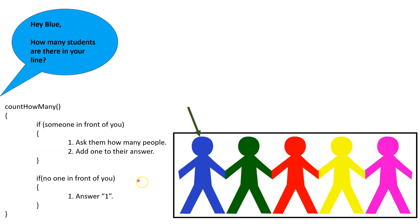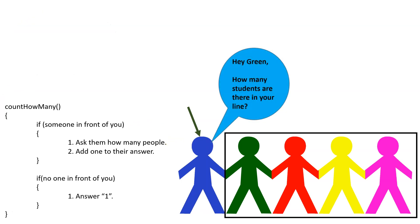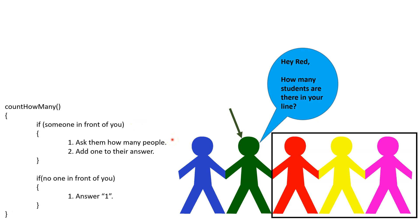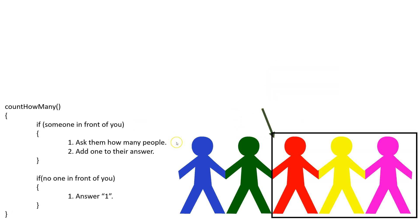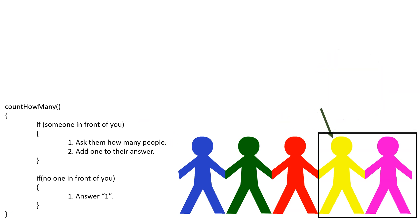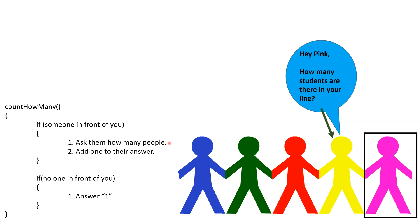Let's try out this algorithm and see how it works. Blue starts by checking: is there someone in front of him? There is, so he asks that person how many people are in their smaller line. Green looks at the line, sees there is someone in front of them, and asks how many people are in your line. Red checks his line, sees there is someone in front of him, and asks that person how many people are in your line. Yellow looks at the line, sees there is someone in front of him, and asks that person the same question. Pink looks at his line, sees there is no one in front of him, so he goes to the base case and simply answers one.